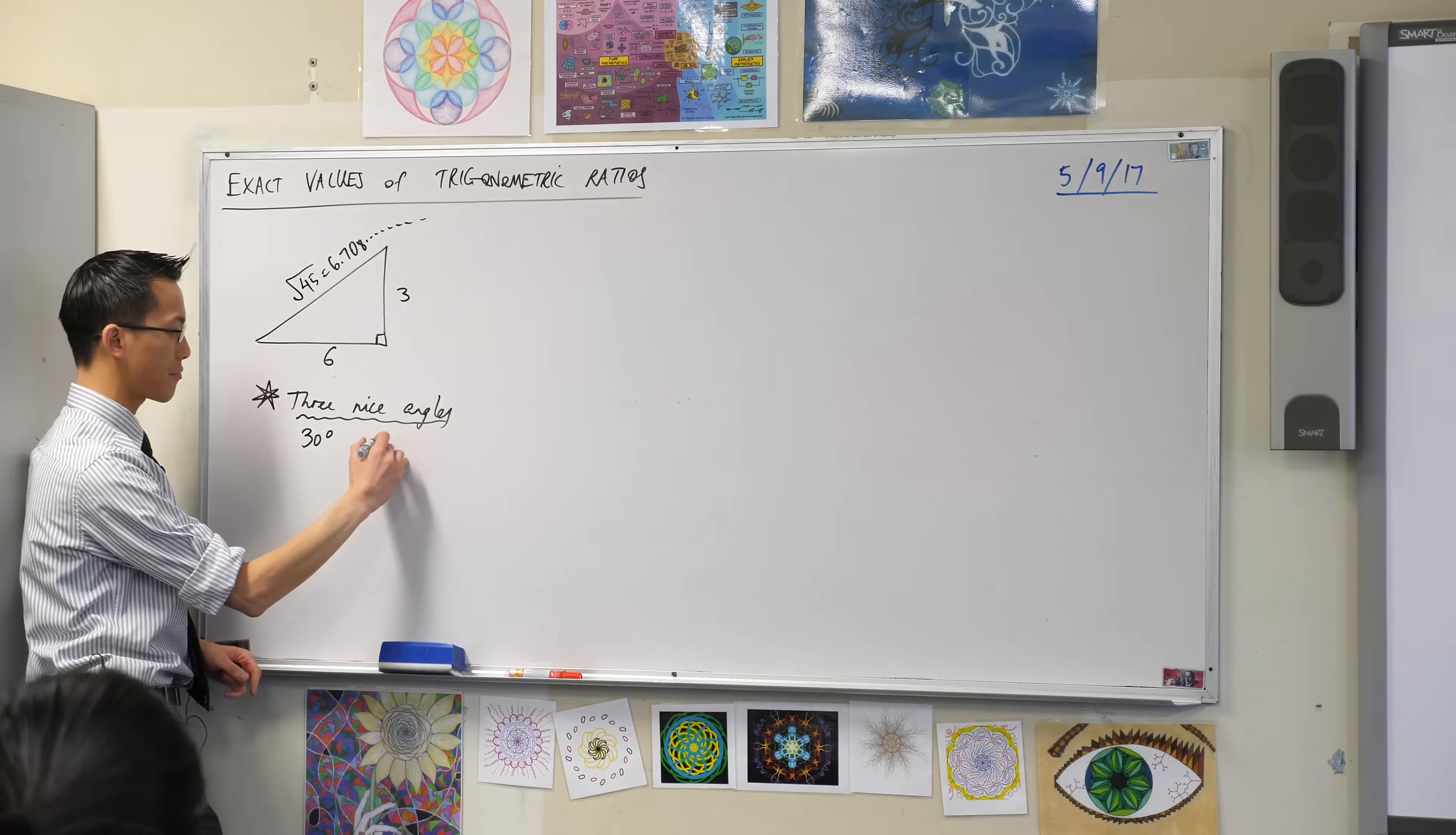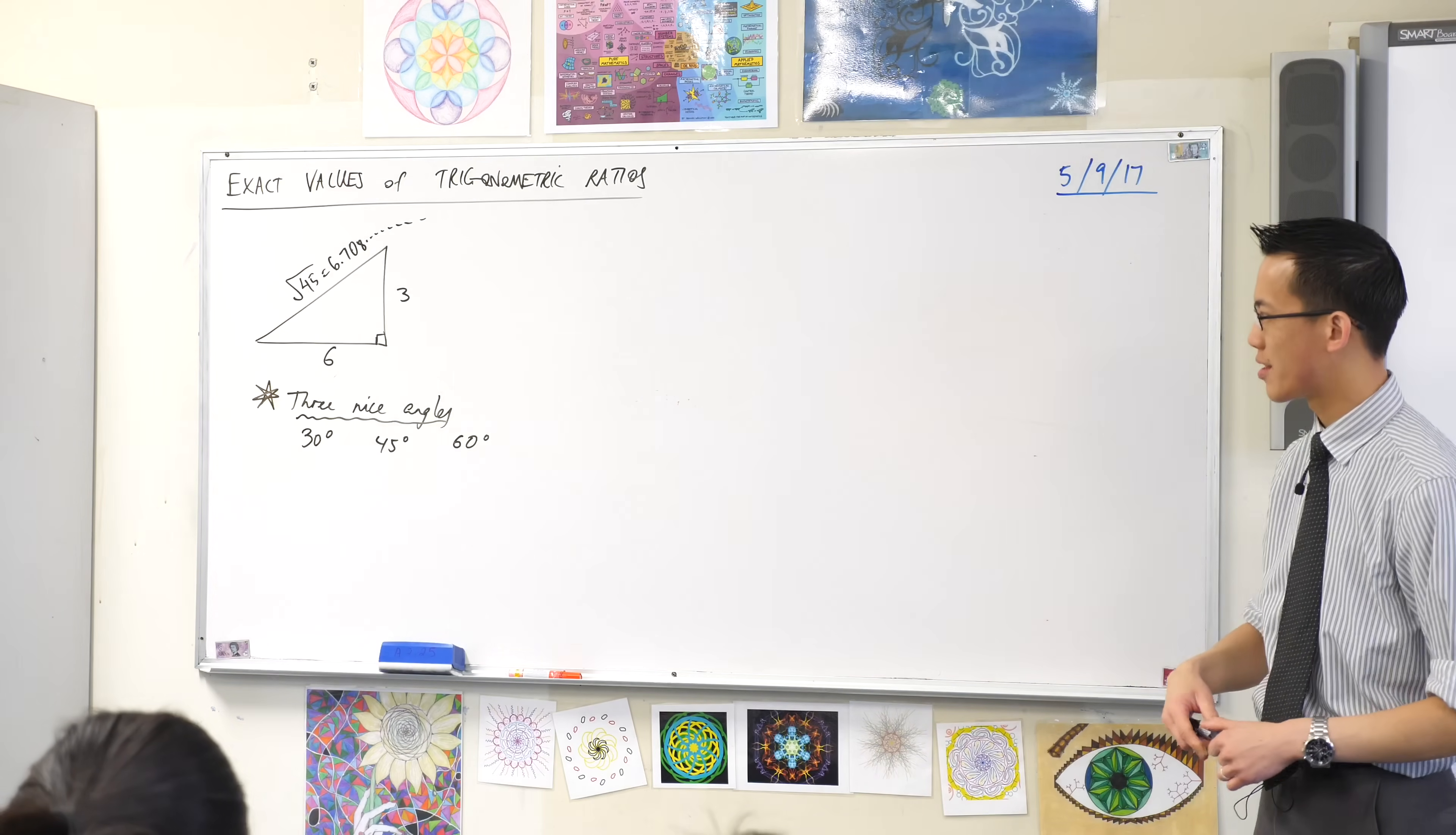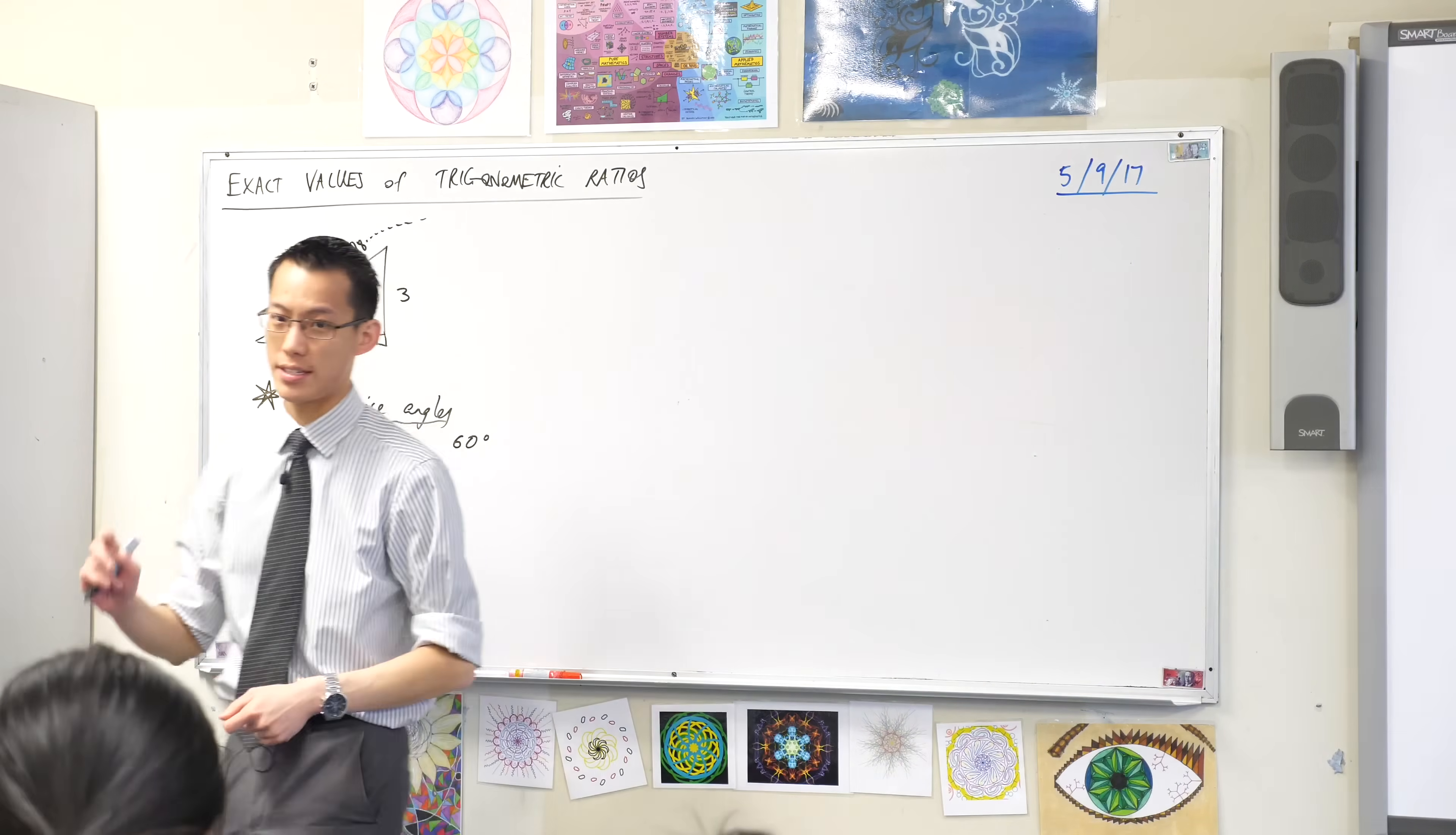So, three nice angles. As we'll learn later on, there are actually more, but these three are the ones that come first. They're 30, 45, and 60. 30, 45, and 60. Now, why should these be the angles that come up over and over again? As we draw some triangles that include them, you will see why. 30 degrees, 45, and 60.